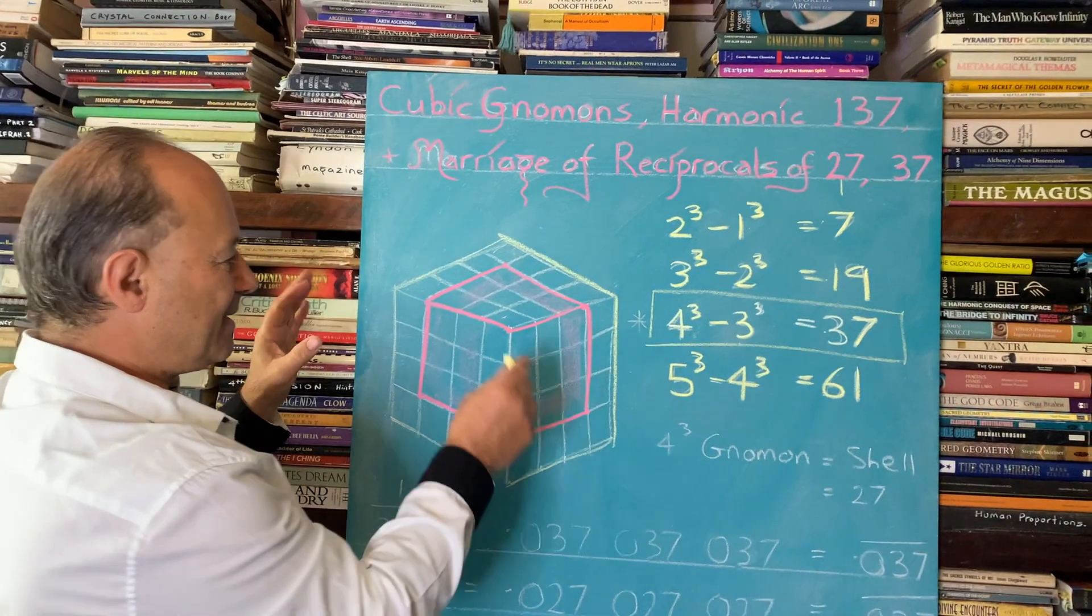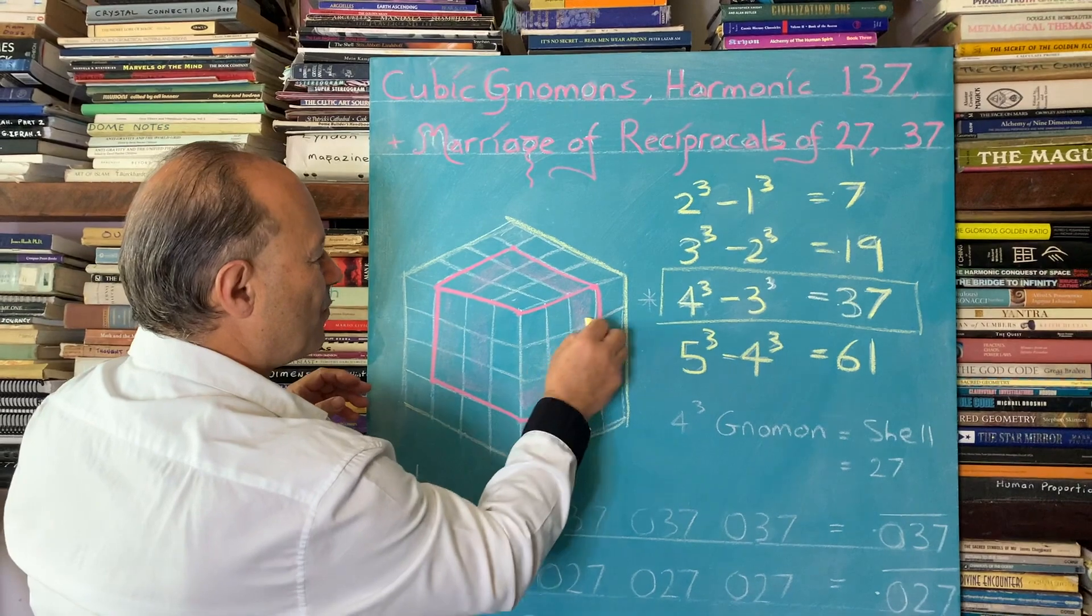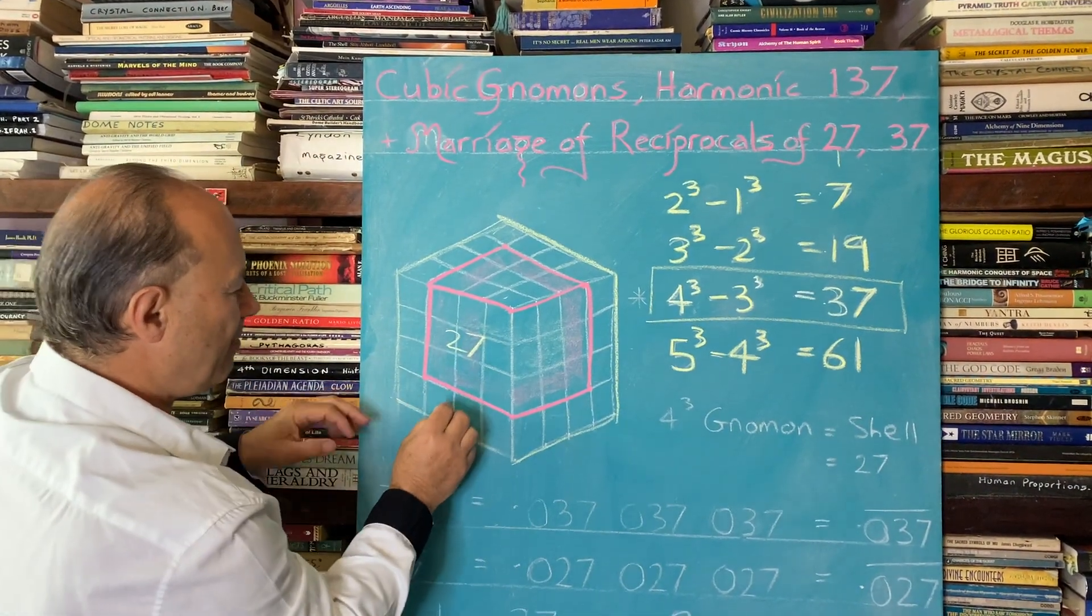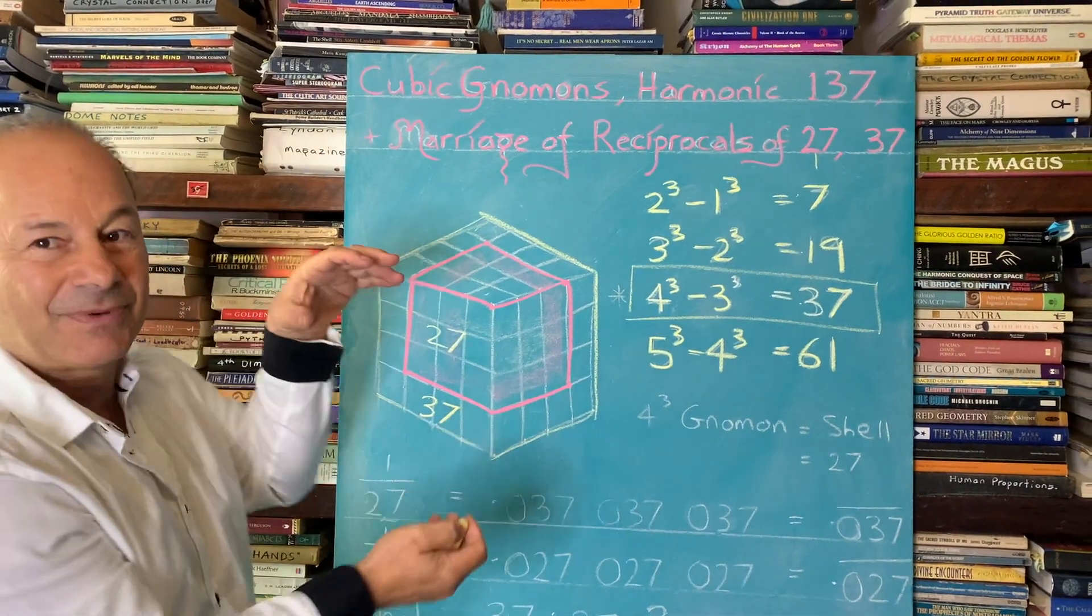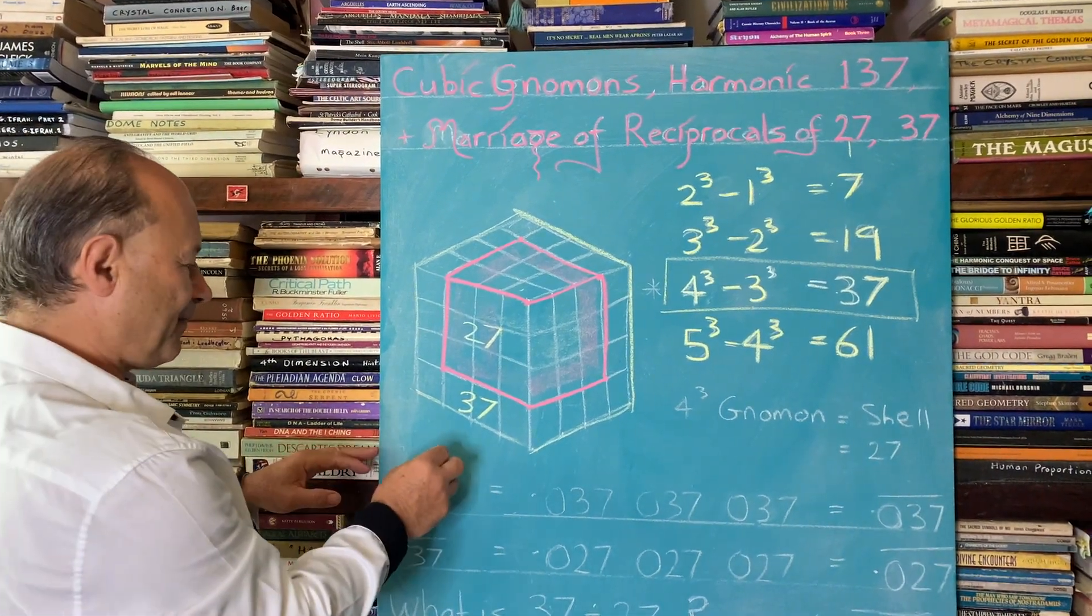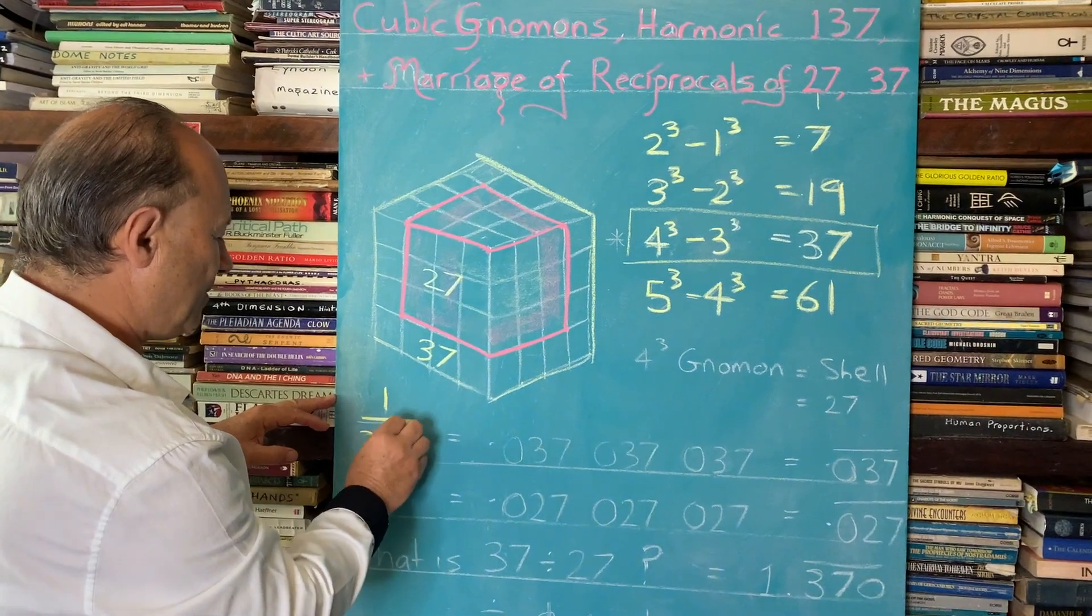But like I said, this investigation is, there's something special about the third, the 3 cubed is 27. And over here, we've got 37. There's something very special. It's all contained within the 64. So I'm going to investigate the reciprocal of these two numbers.